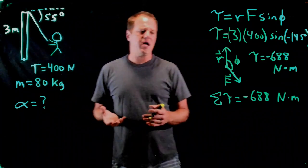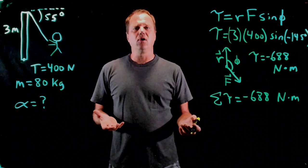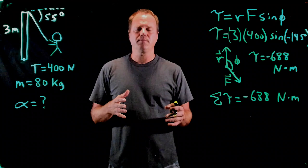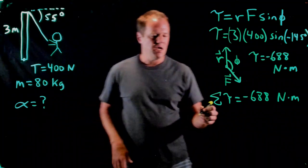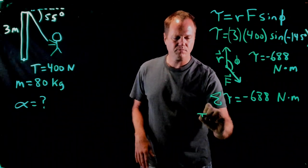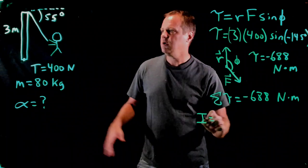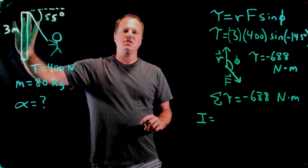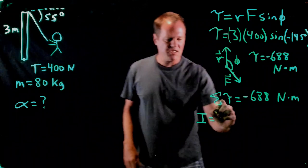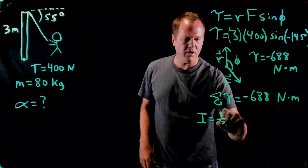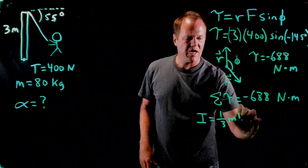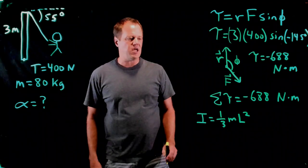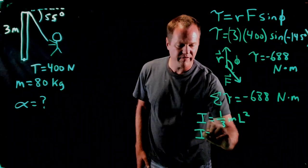And so this is typically something that you'll look up in a table depending on the geometry, based on the pivot point and the shape of the object. And for this particular shape, a beam or post or whatever with an axis of rotation at one end has a moment of inertia of one third times the mass times the length squared. And so just chuck numbers into that formula, and you get the moment of inertia.